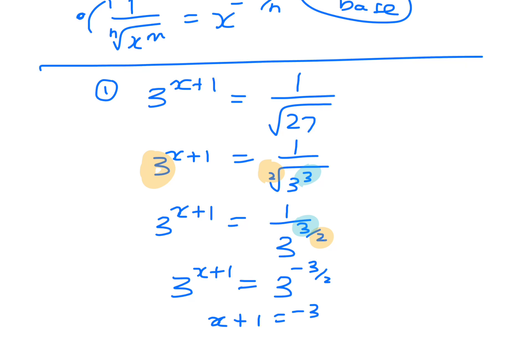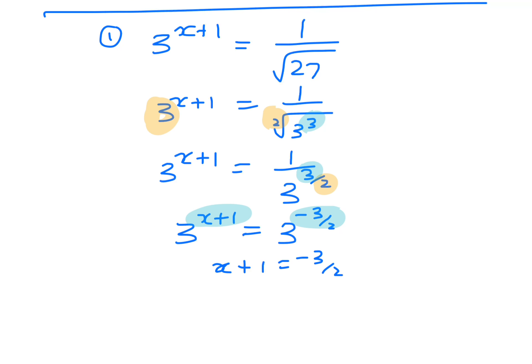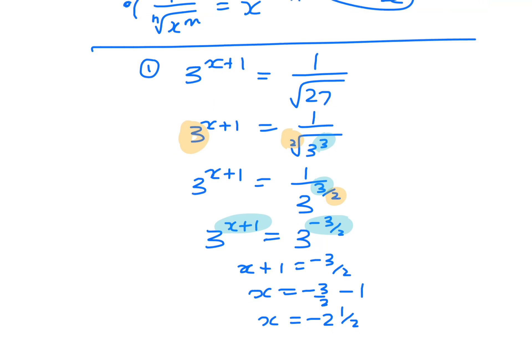And then we just know that these indices here, because they have the same base, those indices here must be equal to each other. So that means x equals minus 3 on 2 minus 1, so x is minus 2 and a half because 3 on 2 is 1 and a half.